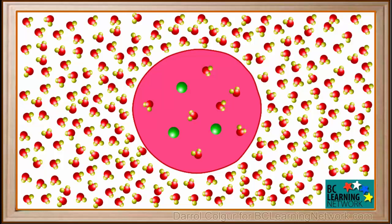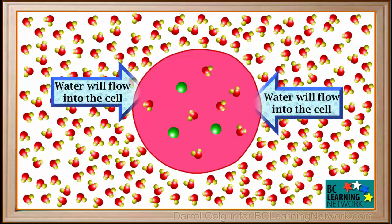Water flows from an area of high water concentration to an area of low water concentration. So do you think the water will flow out of the cell or into the cell? We see that in this case, it will flow into the cell.